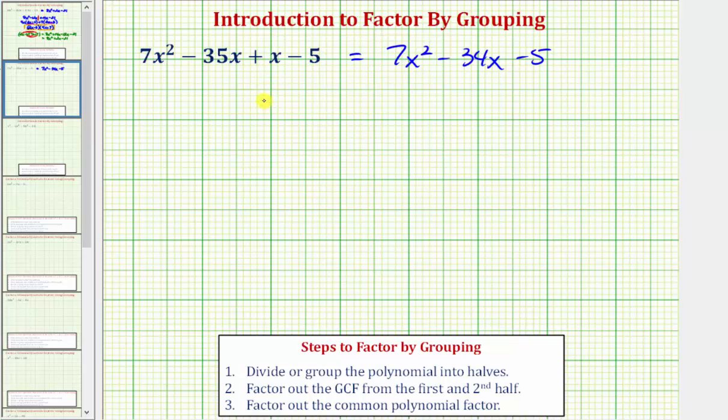So let's go ahead and write this as 7x squared minus 35x, so that's the first half. And the second half is going to be plus x minus five.